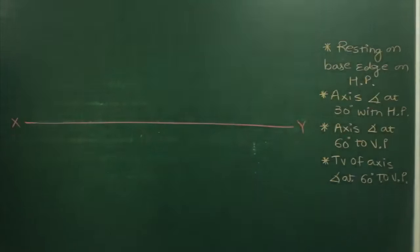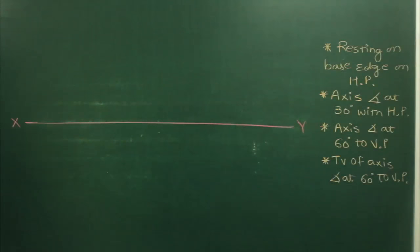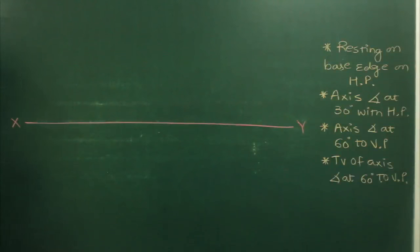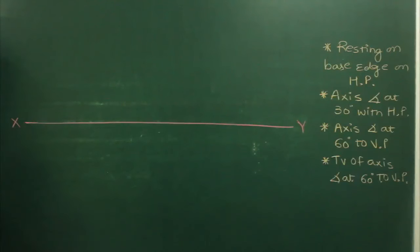In this sum, a square pyramid is resting on its base edge on HP, with the axis inclined — targeting HP — and then again axis inclined 60 degrees to VP. The top view's axis is also inclined 60 degrees to VP.